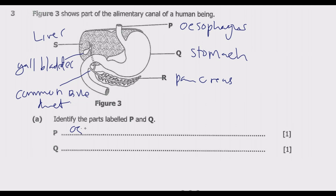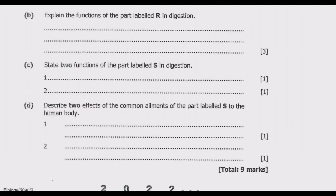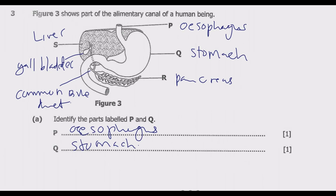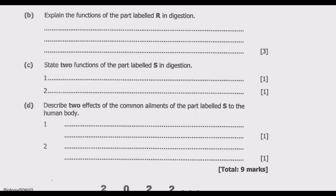We have identified the parts: P is the oesophagus and Q is the stomach. Moving to the next question, which asks you to explain the functions of the part labeled R in digestion. Part R is the pancreas. The pancreas has two main functions, categorized into the exocrine function and the endocrine function.